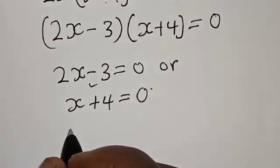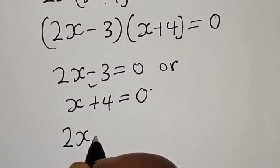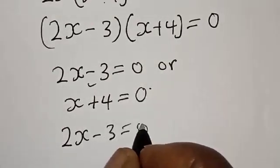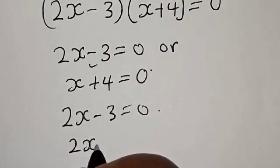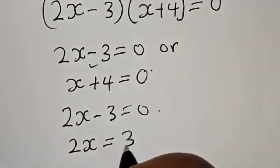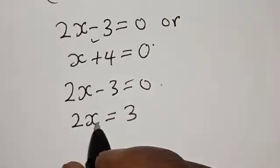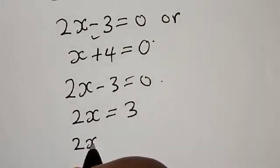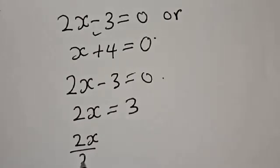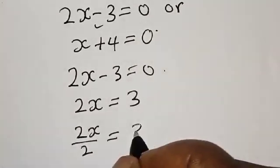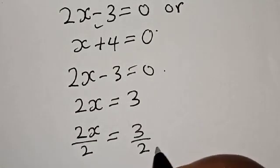From here, we have 2x - 3 equals 0. 2x equals 3. Let's divide both sides by 2. Then we have 2x divided by 2 equals 3 divided by 2.